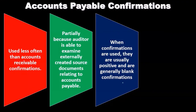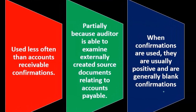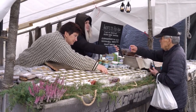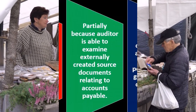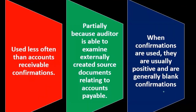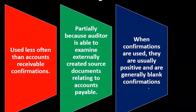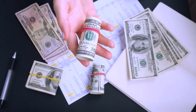Notice that with accounts receivable confirmations, the person who receives it owes the company money, so they have less incentive to cooperate — they might not want to deal with it. However, when dealing with a vendor, the company we are auditing owes them money. So if we ask them how much they're owed, they're more likely to know exactly and have incentive to look it up and send it back, resulting in a higher response rate for accounts payable confirmations.